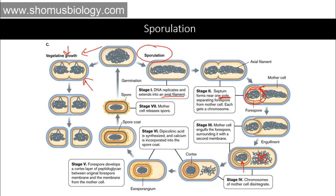Once this structure is formed, it is time for the spore to come out. The mother cell releases the spore; the spore may remain inside the mother cell, or sometimes the mother cell cracks itself open and the spore is spread to the neighboring environment. This happens when the environmental conditions return to the optimum state — optimal temperature, pH range, and proper nutrient supply are all met for the bacteria to grow.